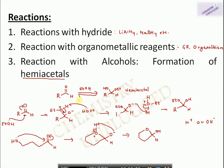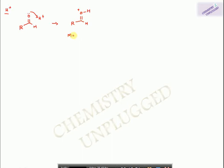We obtain a molecule of lactol. This mechanism applies when no acid or base catalyst is used. Generally, we use an acid or base catalyst. In the acid-catalyzed mechanism, the lone pair of electrons on oxygen attacks H⁺, giving the oxygen a positive charge. Now the carbonyl carbon, already electrophilic, becomes more electrophilic because the electronegative oxygen bearing a positive charge withdraws electron density further, enhancing the reaction rate.